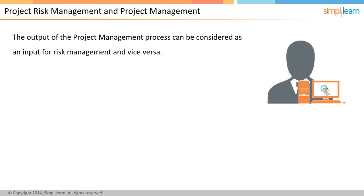When you say risk management is an integral part of project management, it means that they are dependent on each other. The output of many project management processes can be considered as an input for risk management and vice versa. For example, by getting information about project progress in terms of schedule, if it is not in line with the expected progress, it can become a risk. Risk management then plays an important role in deciding what response must be given or what actions are to be taken. Similarly, based on the response of risk management, the project management plan with respect to the deliverable will change.